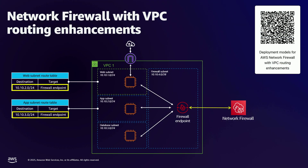This next one has also been around for a while — Network Firewall with VPC routing enhancements. In a VPC with a firewall endpoint, traffic between different subnets used to use local routing, so you couldn't pass traffic through the firewall endpoint when going between, say, the app subnet and the database subnet. It didn't work like that before. With this VPC routing enhancement, it now lets you bypass that default local routing and send traffic through the firewall when going between those different subnets.